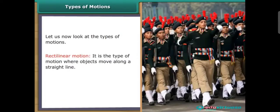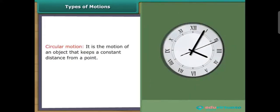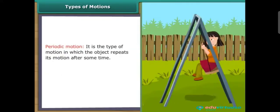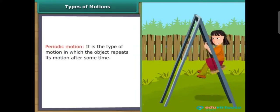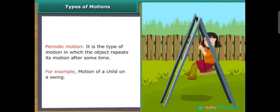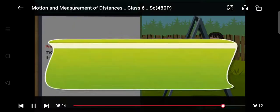Types of motions — rectilinear motion is the type of motion in which objects move along a straight line, for example the march-past of soldiers in a parade. Circular motion is the motion of an object that keeps a constant distance from a point, for example the hands of a clock. Periodic motion is the type of motion in which the object repeats its motion after some time, for example the motion of a child on a swing.